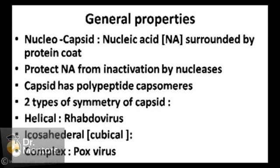The nucleocapsid — 'nucleo' meaning nucleic acid (either DNA or RNA) — is surrounded by a protein coat. The nucleocapsid protects the nucleic acid from inactivation by nucleases. The capsid is made of polypeptide capsomeres. There are two main types of symmetry: helical, like the bullet-shaped rhabdovirus, and icosahedral (cuboidal), which most pathogenic viruses have. The third type is complex symmetry — there is only one example in microbiology of a virus with complex symmetry, and that is the pox virus, which is a very large DNA virus.